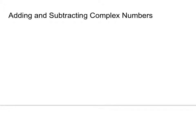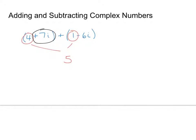Now let's look at adding and subtracting complex numbers. If I've got 4 plus 7i and I'm adding that to 1 minus 6i, I take the real parts and add them together to get 5. Then I take the imaginary parts — the coefficient 7 and negative 6 — so 7 plus negative 6 gives i. So the result is 5 plus i. I add the parts that are alike: real with real, imaginary with imaginary.